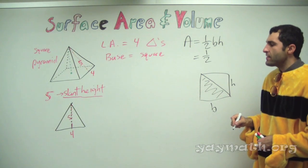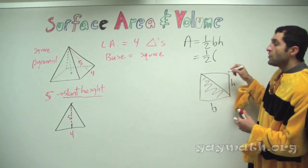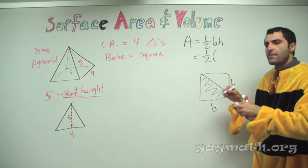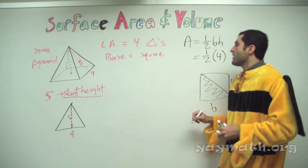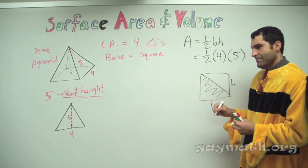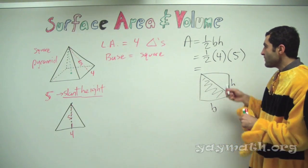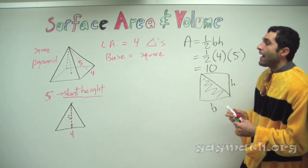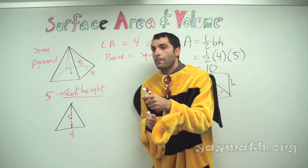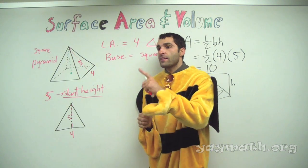One half. What's the base? We call the base four, and the height is five. One half times four times five — what does this become? Ten. So the area of one triangle is ten. Thus, what's the area of all of the triangles? Forty. Area of one triangle is ten. How many triangles exist? Four. Each one is ten, so all together it makes forty.